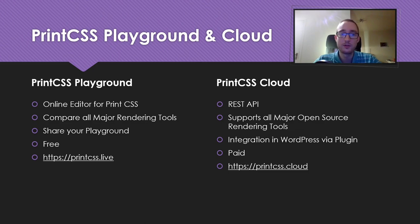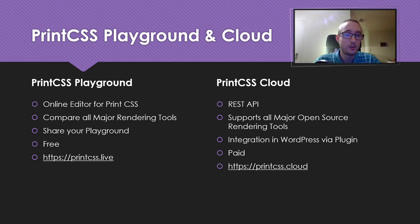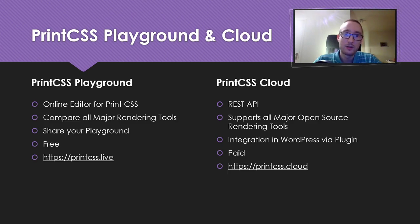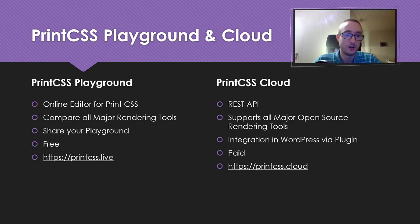The Print CSS Playground is an online editor for Print CSS, similar to CodePen or the Tailwind CSS Playground, where you can edit your HTML, CSS, and JavaScript online and get a PDF out. You can compare all the major rendering tools — that is, the tools with decent CSS paged media support. You can share whatever you create there with a shareable link, similar to how you know it from CodePen or other online editors.